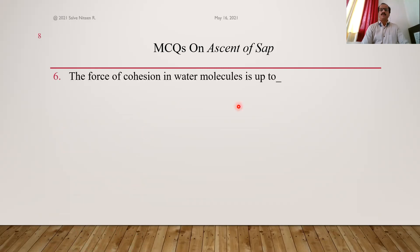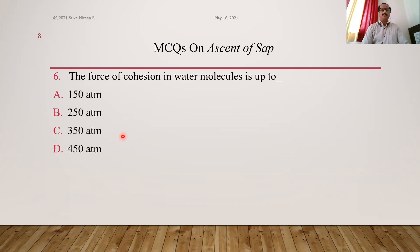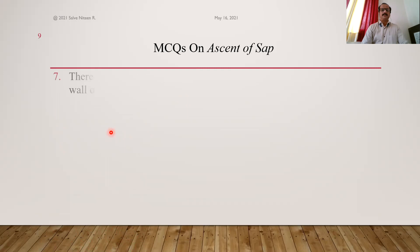Question 6: The force of cohesion in water molecules is up to what magnitude? It is 350 atm — a very high magnitude. Option C is the right answer.